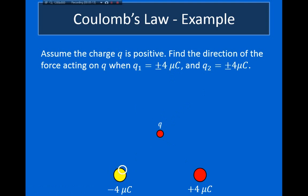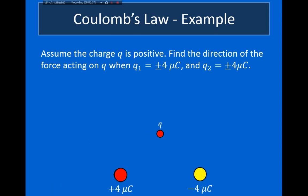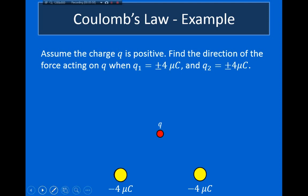If the charge in the bottom left corner is negative, it attracts the center particle downward-left, while the positive charge at bottom right still repels it — adding these gives a net force pointing to the left. Reversing the charges so positive is on the left and negative on the right, the center particle is attracted toward the negative and repelled from the positive, giving a net force pointing to the right. Finally, if both bottom charges are negative, both attract the center particle downward, giving a net force pointing downward.